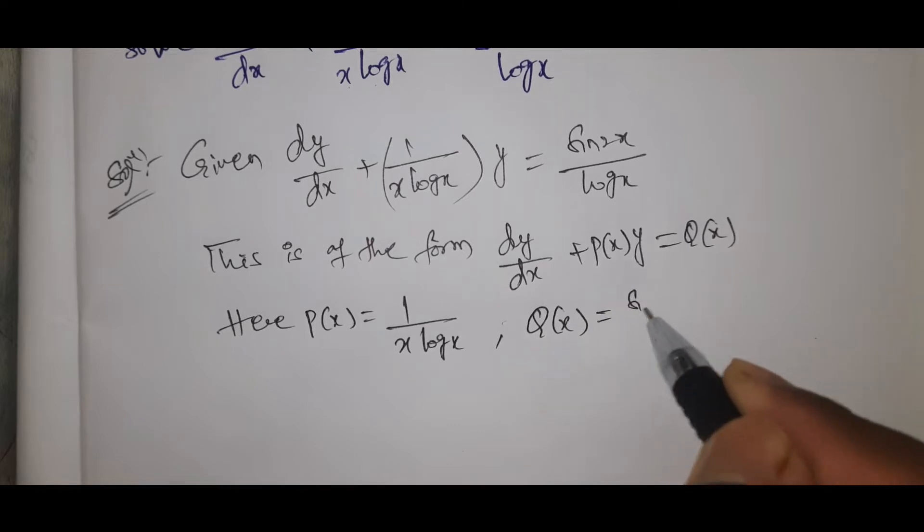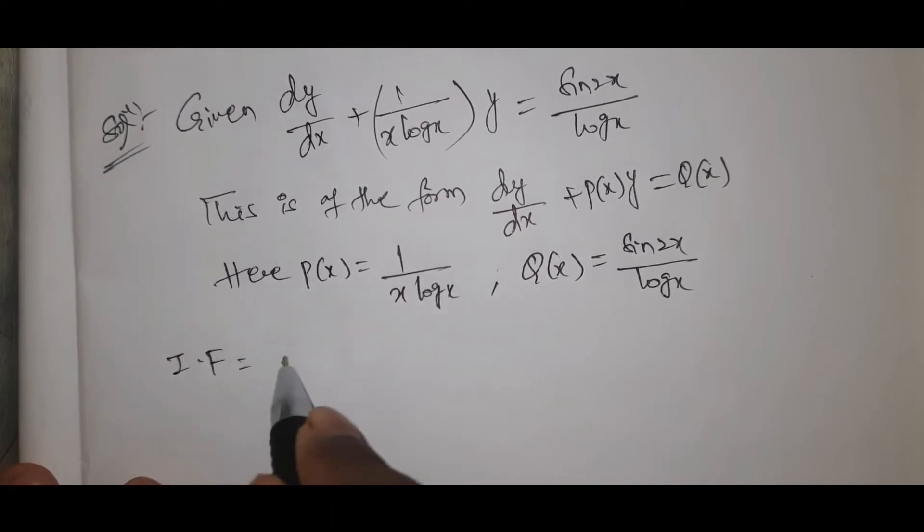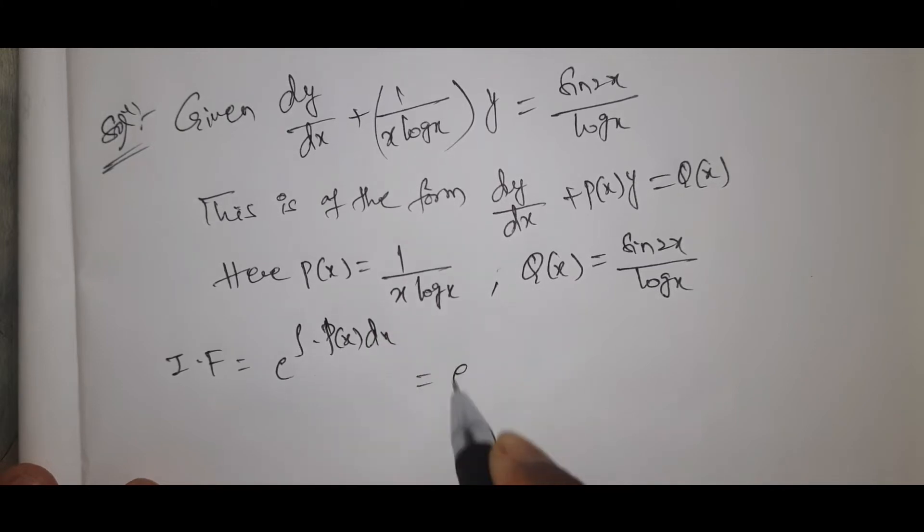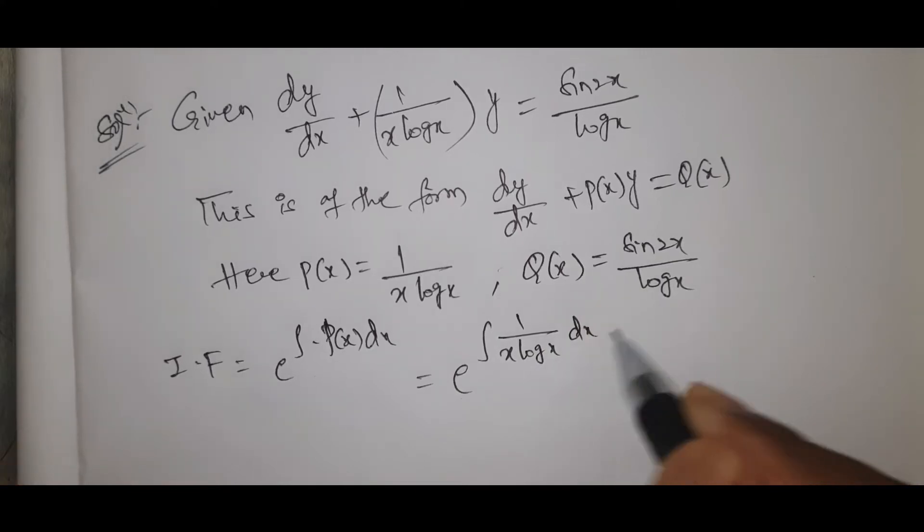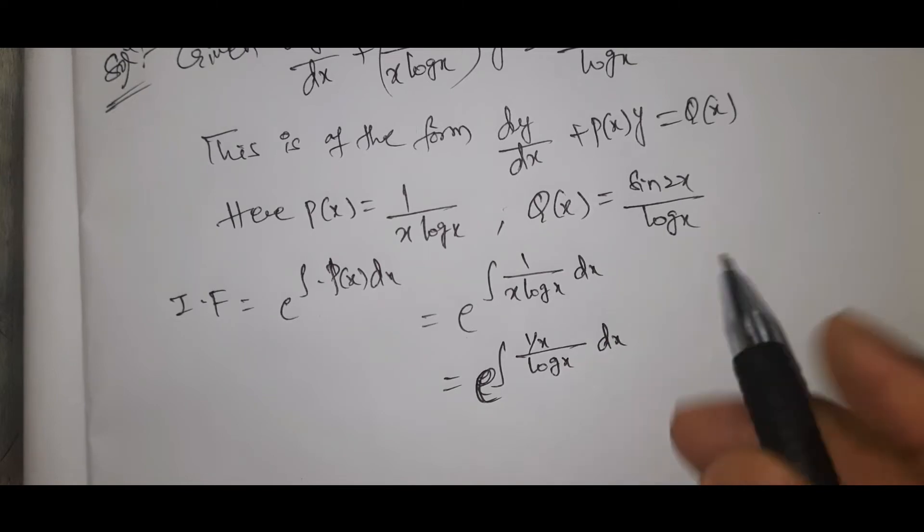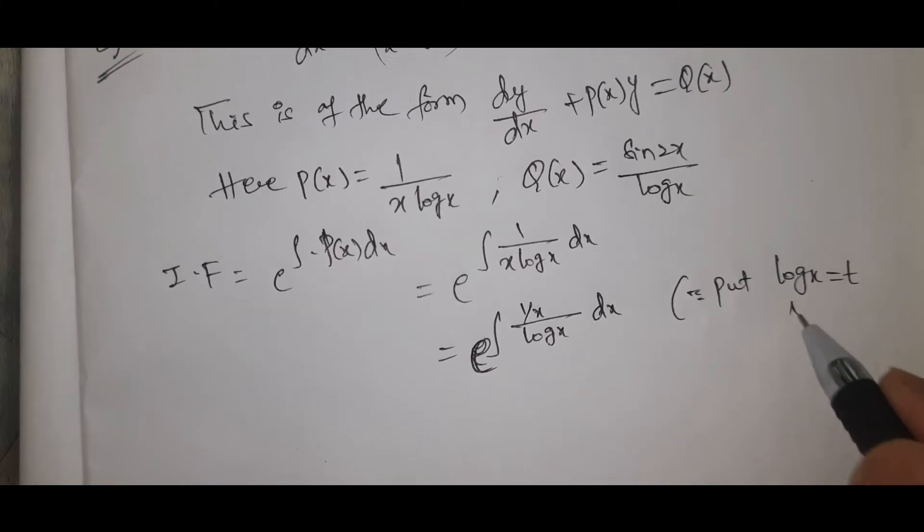Q of x is sin 2x by log x. Now integrating factor e power integral P of x dx, that equals e power integral 1 by x log x dx. Put log x equal to t, then 1 by x dx equal to dt.